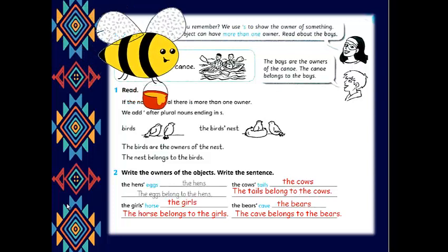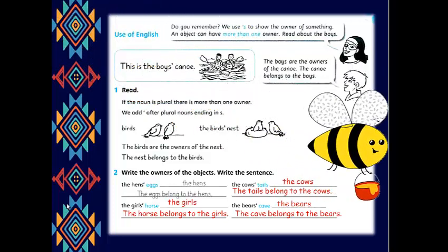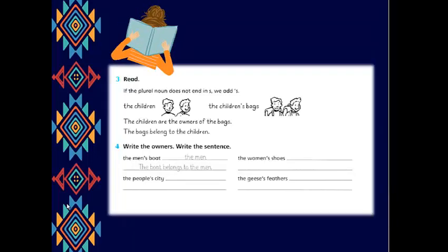Good job. I hope that all of your answers are well. Let's try another exercise. But first, read if the plural noun doesn't end with S, we add apostrophe S. Like the children. The children's bags. The children are the owner of the bags. The bags belong to the children.